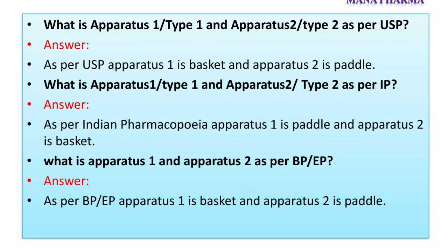What is apparatus 1 and apparatus 2 as per BP and EP? Answer: As per BP and EP, apparatus 1 is basket and apparatus 2 is paddle.